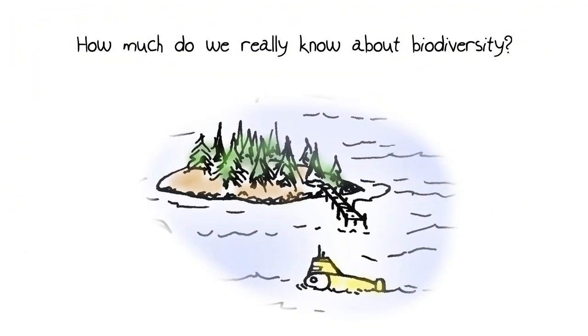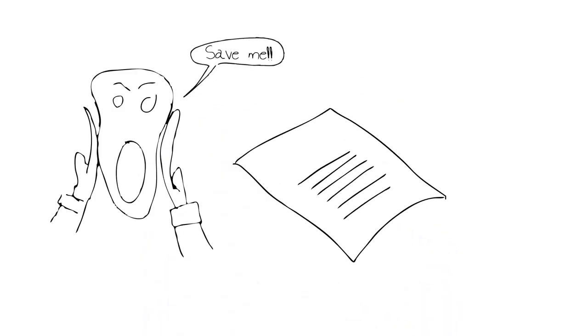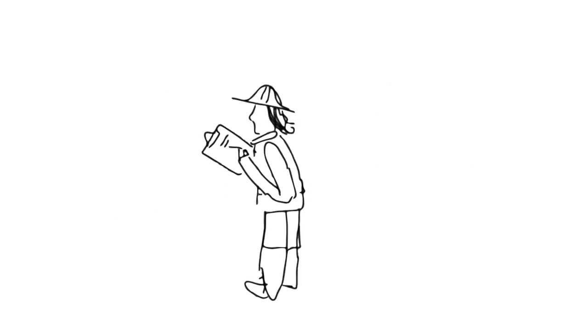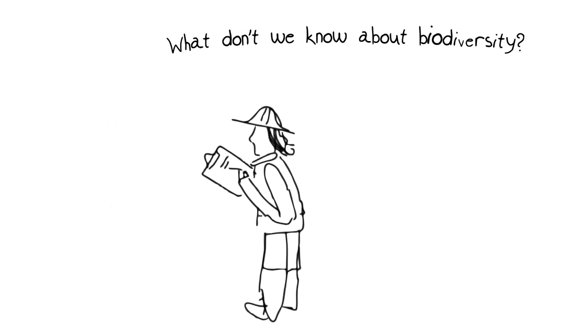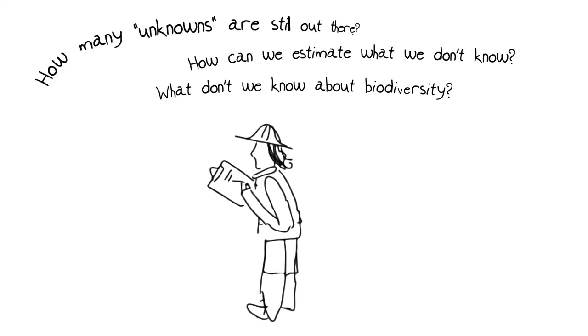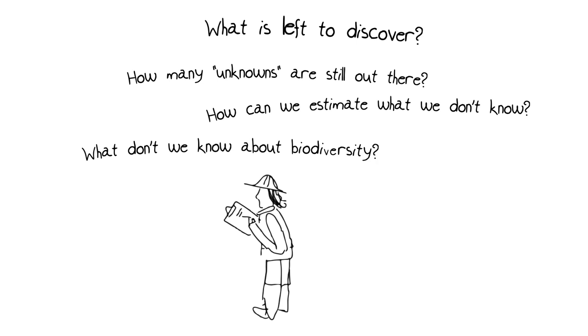How much do we really know about biodiversity? That's a really open-ended question. It's like a question on a final exam in a school kid's nightmare: list in alphabetical order the things that mankind does not know. But for our very real question, there are people who are trying to bring a scientific angle to answering this mystery of what we do not know about biodiversity. How can we estimate what we don't know? How many unknowns are still out there? What is there left to discover?